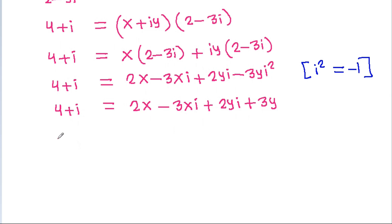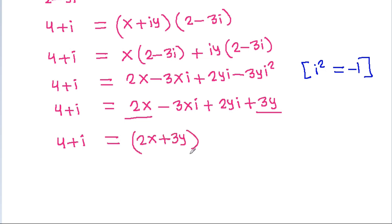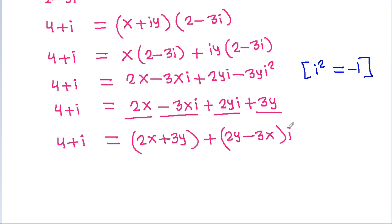So 4 + iota is equal to (2x + 3y) plus (2y - 3x)·iota. Now we can compare the real and imaginary parts on both sides.